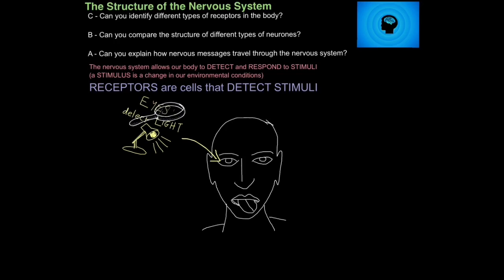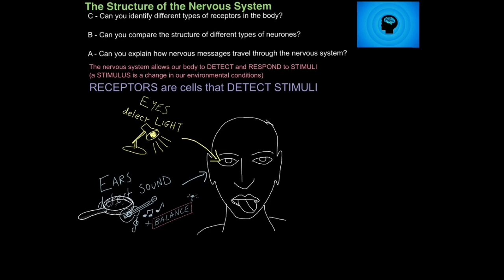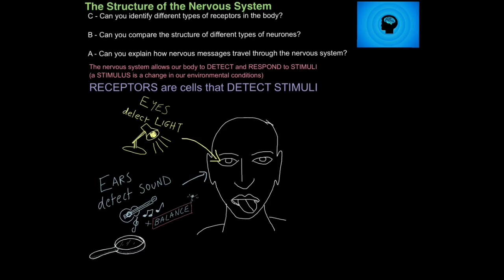Our eyes are an example of a receptor organ, and they contain photoreceptors — cells that detect light or changes in light. Next up are our ears, and ears contain cells that can detect changes in sound. Also, if you close your eyes, you'll notice that you have an awareness of how upright you are, and that's because in your ears you have receptors that can detect balance as well.